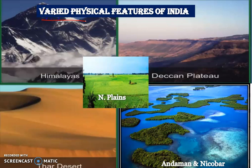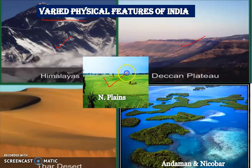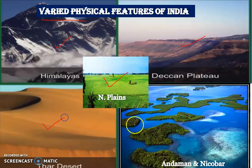India is a land of varied physical features. In fact, India has all the physical features of the earth — that is, mountains, plateaus, plains, deserts, and islands.